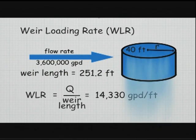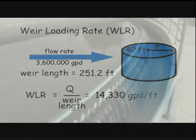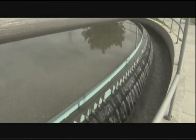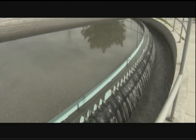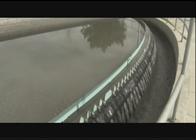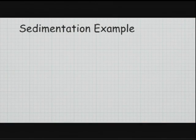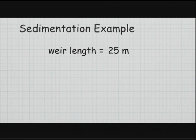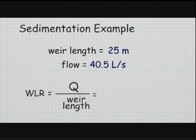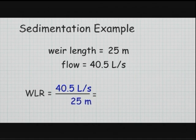14,000 gallons per day per foot is within normal operating range. Let's look at another example, except this time we'll use metric units and solve for per second instead of per day for the time factor. We have a sedimentation basin with a weir length of 25 meters and a flow of 40.5 liters per second. The weir loading rate is 40.5 divided by 25 meters of weir length.